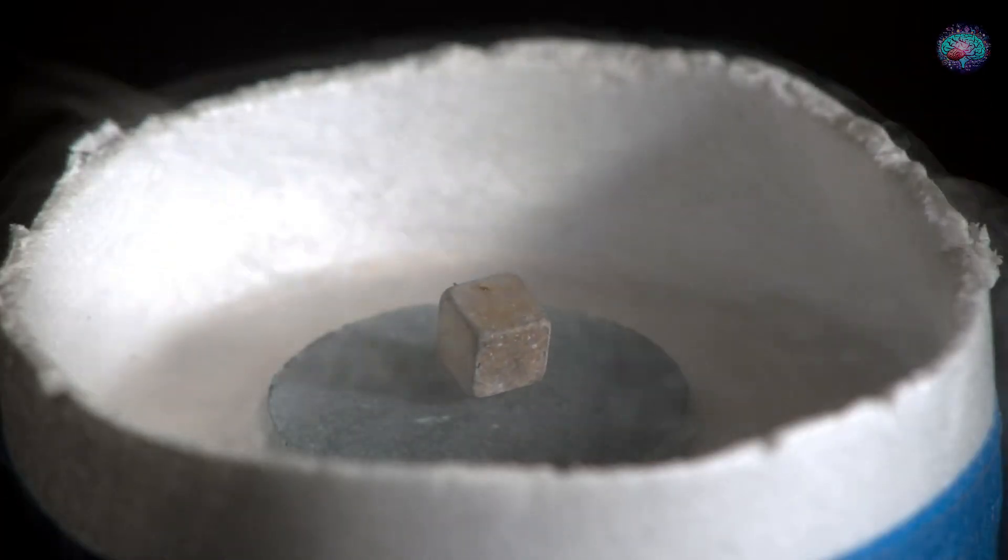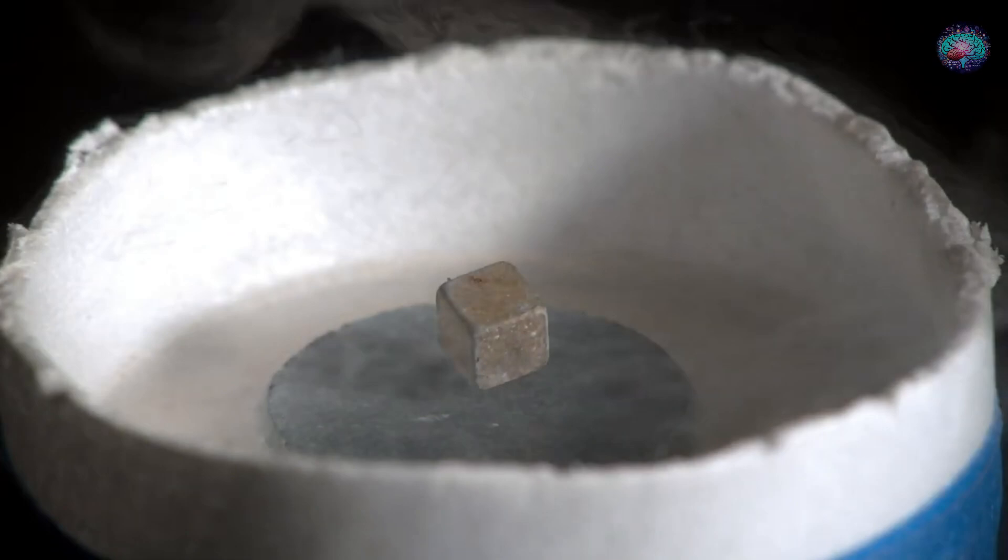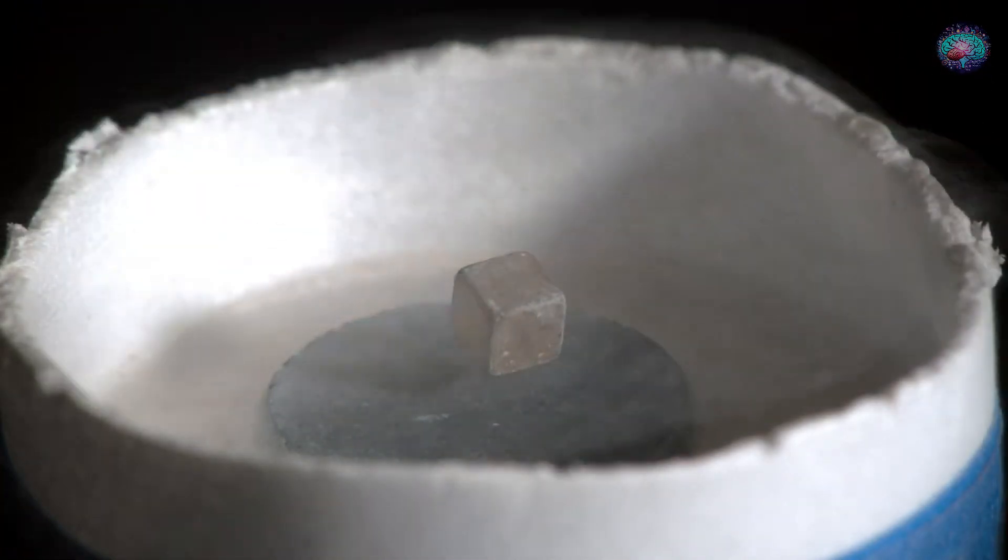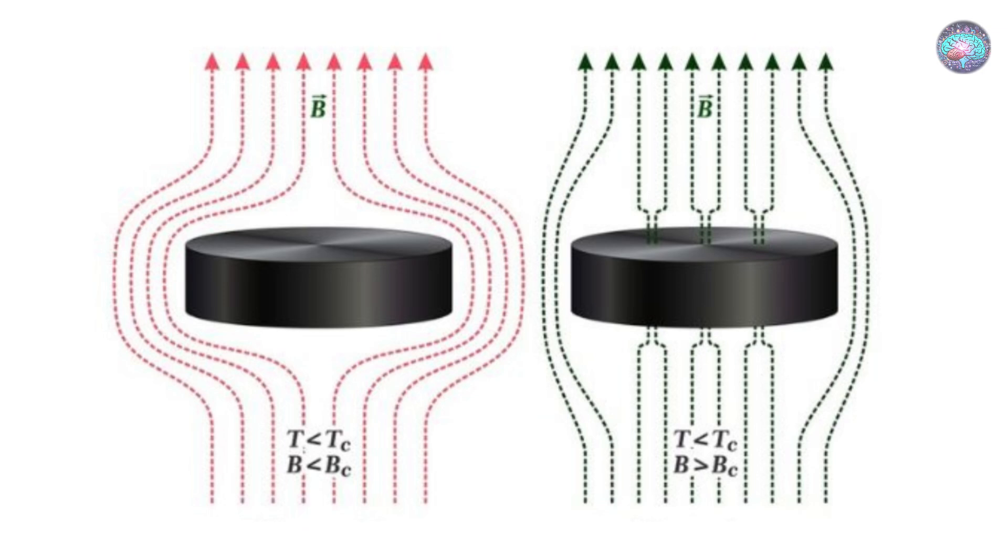This effect allows the superconducting material to maintain a non-magnetic state, keeping it suspended within the magnetic field. Superconducting materials are divided into two types: type 1 and type 2 superconductors.